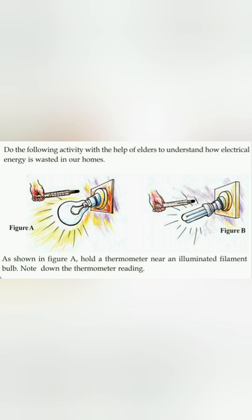We have to do this experiment and make observations. The purpose of a bulb is to produce light. If a bulb produces heat instead of light, that heat is a waste — it is a loss of energy. The filament bulb produces light but also produces a significant amount of heat energy, which is wasted.